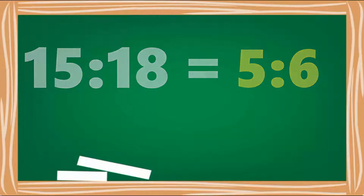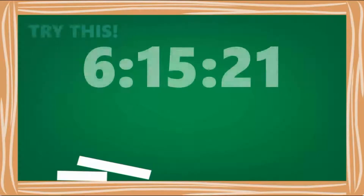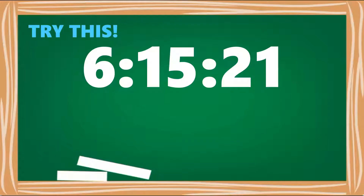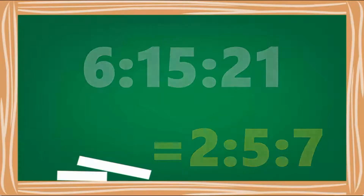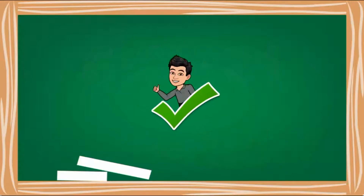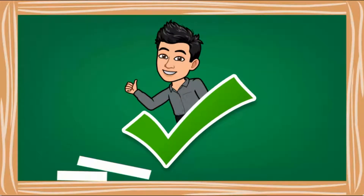Try this — you can pause the video to check it out. The correct answer is 2 to 5 to 7. These examples are also called equivalent ratios. Very easy, right?